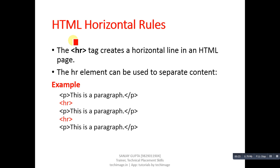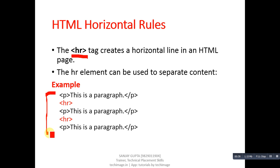First I am going to explain the horizontal rule, known as the HR tag. The HR tag creates a horizontal line in an HTML page and can be used to separate content. In this example, three P tags are used and inside the tags, two HR tags are used.